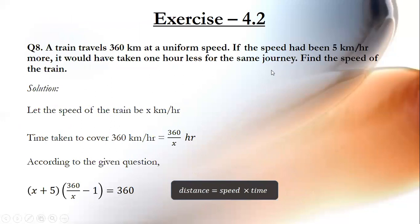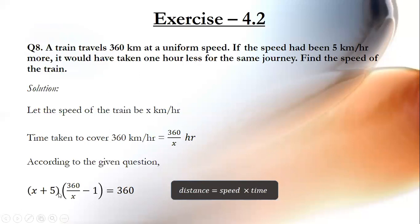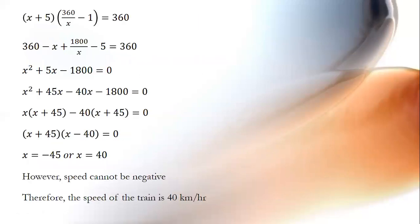Now Question Number 8. A train travels 360 km at a uniform speed. If the speed had been 5 km per hour more, it would have taken one hour less for the same journey. Find the speed of the train. Let the speed of the train be x kilometres per hour. Time taken to cover 360 km is 360 by x hours. According to the given condition, if the speed was increased by 5, it would have taken one hour less, so the time becomes 360 by x minus 1.